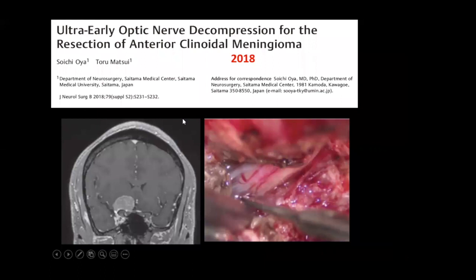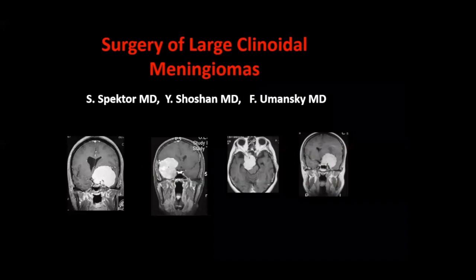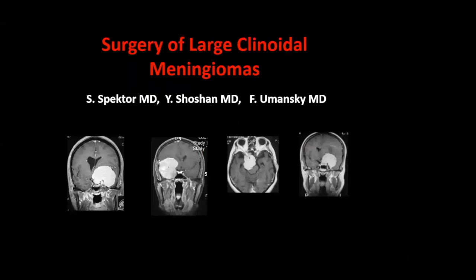This paper from Japan about early optic nerve decompression — drilling the anterior clinoid and opening the optic canal — is an inherent part of this surgery. A paper by Yoha Hernesniemi from Finland, now practicing in China, shows this anterior clinoid meningioma managed by a lateral suborbital approach. A beautiful paper by my great friend Felix Szymanski from Hadassah describes his experience with large clinoidal meningiomas — he wrote many papers on the cavernous sinus medial wall, lateral wall, and roof, and is an authority in that area.